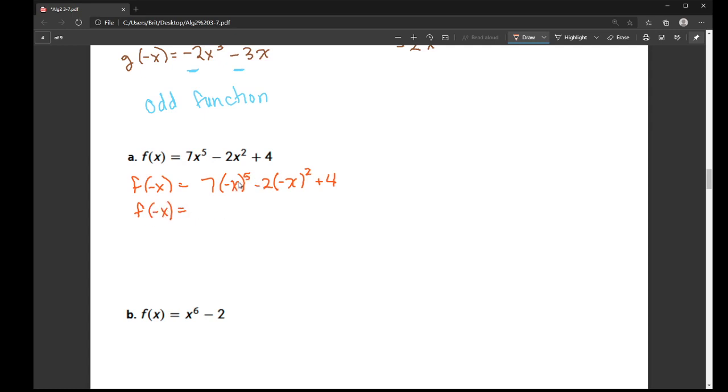So here, with the odd power, this is going to turn into negative 7x to the fifth. Here, with the even power, the sign stays as it was. Don't mind that little line I put in there. So again, because of the even power, the sign stays as it was. So this stays as a minus 2x squared, and then a plus 4.